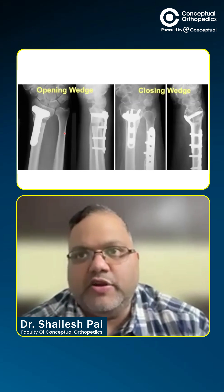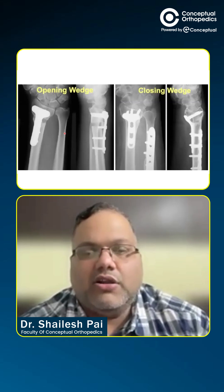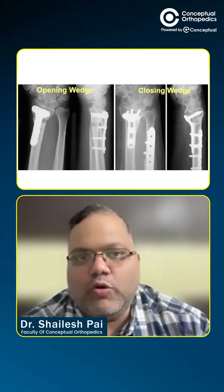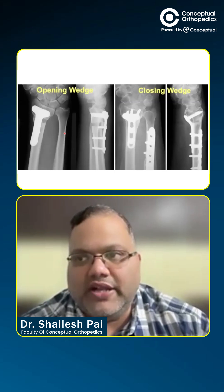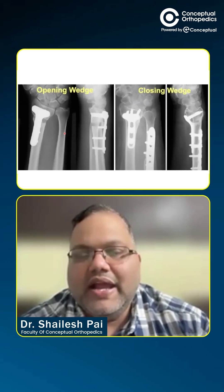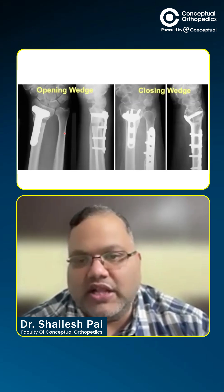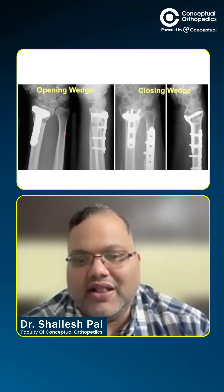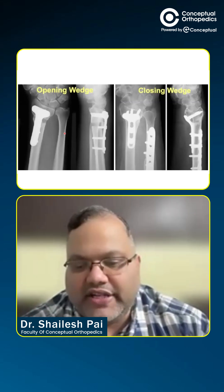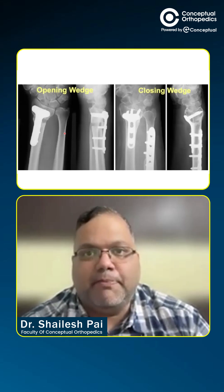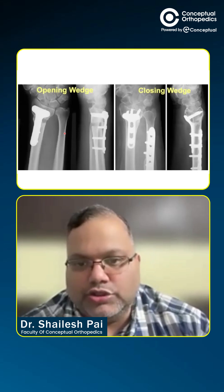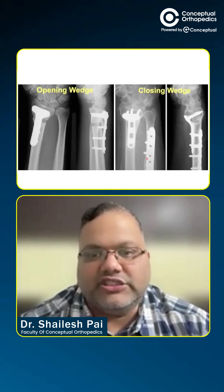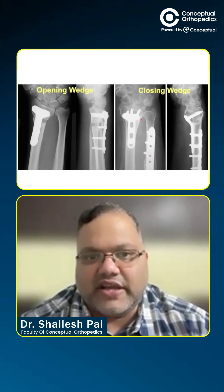Why? Because whenever we do a closing wedge osteotomy anywhere in the body, it reduces the bone length, while an opening wedge osteotomy increases the bone length. So when doing a closing wedge osteotomy in the distal radius, we may end up with a positive ulnar variance — because the radius becomes short, the ulna becomes relatively longer. This means we may also require an ulnar shortening procedure. So not only is a closing wedge problematic, but if you do perform one, you need to be prepared to also do an ulnar shortening osteotomy, as seen here, where the ulna is also tackled to address the variance.